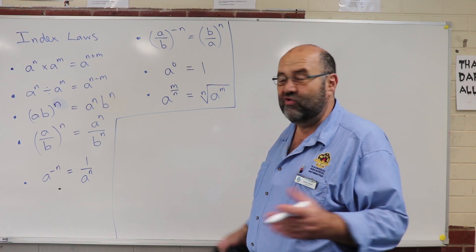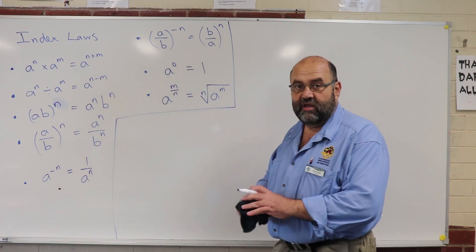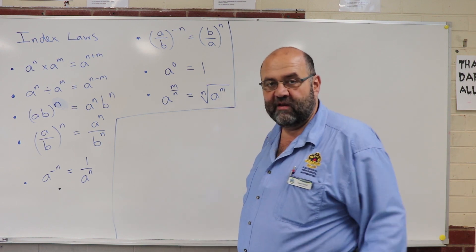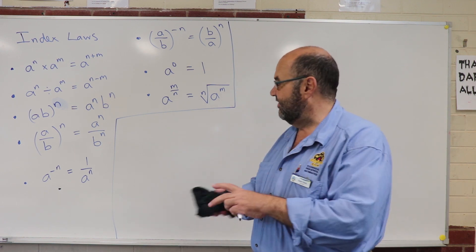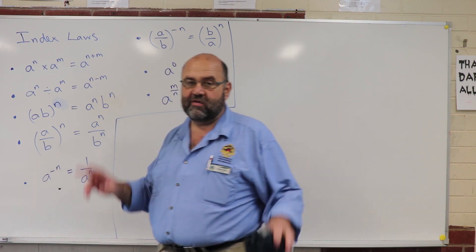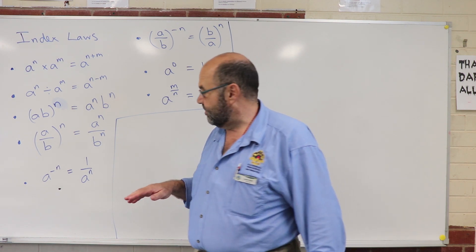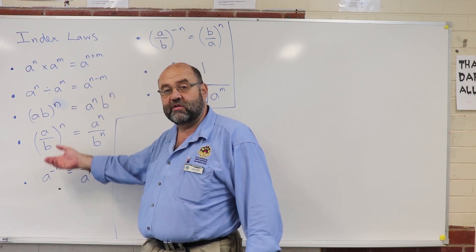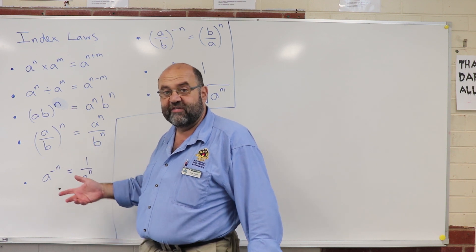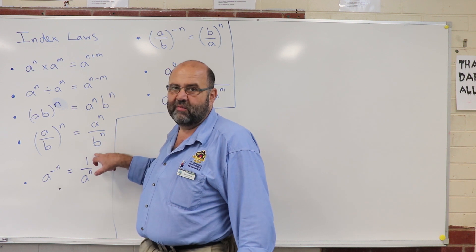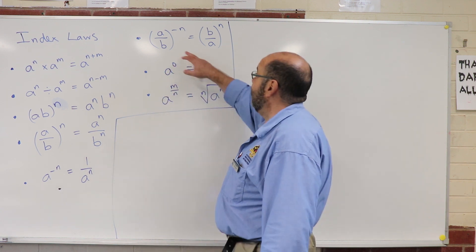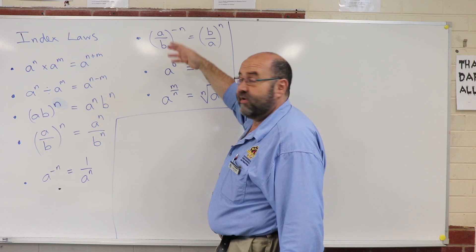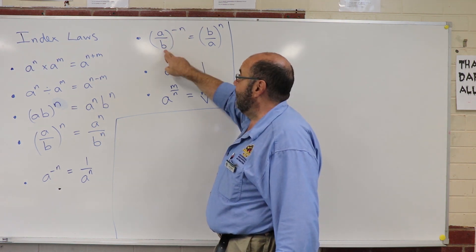What happens when we've got a negative power? There are two related laws. A to the power of negative n equals 1 over a to the power of n. The way I think about negative indices is that anything with a negative power is on the wrong side of the fraction line. So it's sitting over 1, it's got a negative power, it's on the wrong side — it has to cross the fraction line and then it gets a positive power, leaving a 1 behind. Over here, (a over b) to the power of negative n — that power goes to both top and bottom, giving a to the power of negative n over b to the power of negative n.